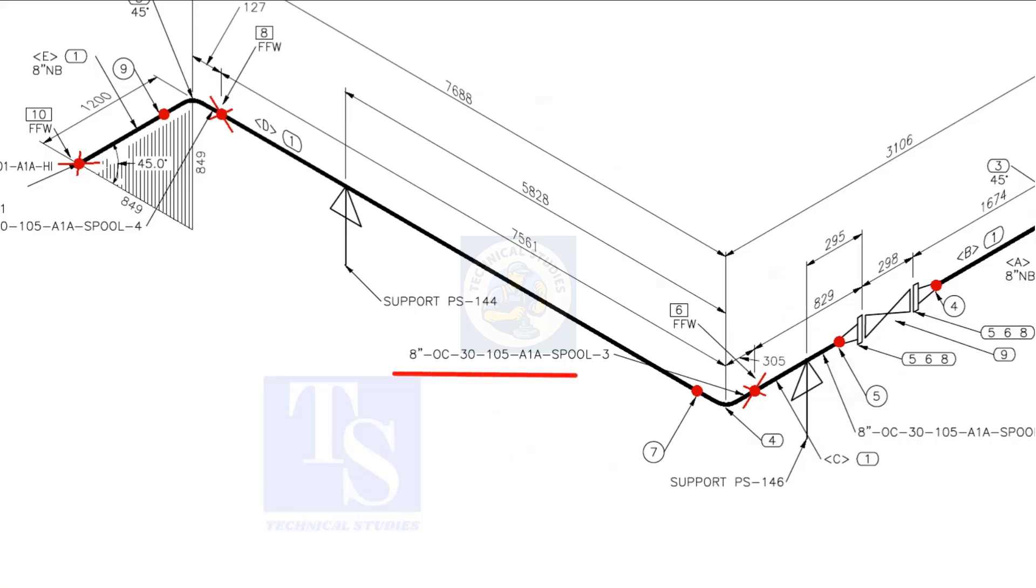Check the details of spool number 3. We know item number 1 is pipe. Check what is item number 4 in the material list.